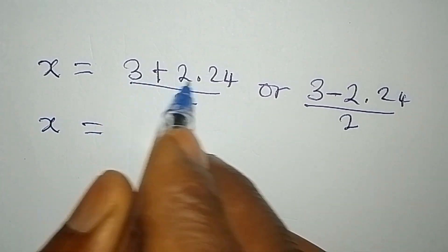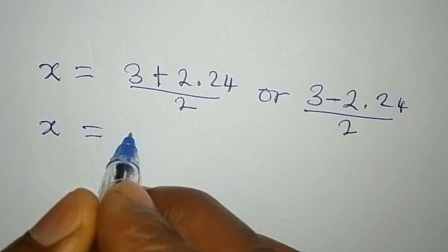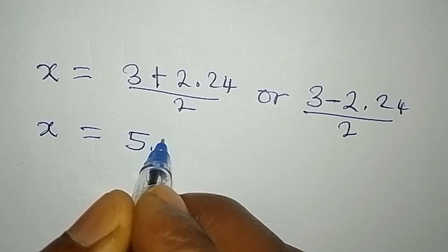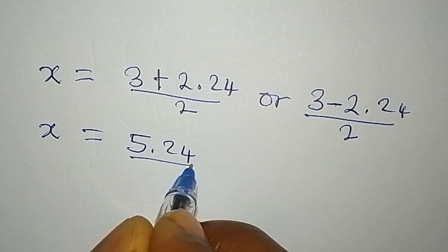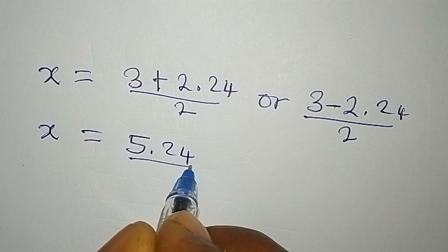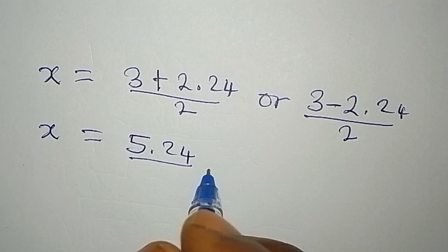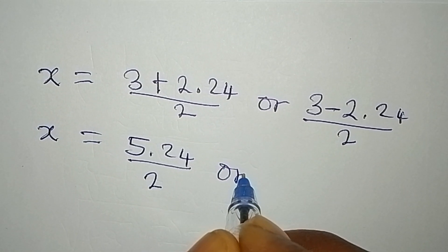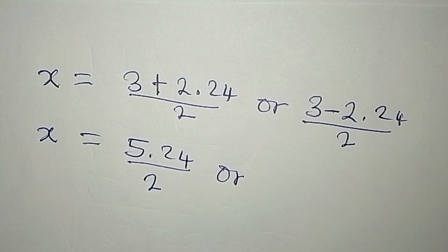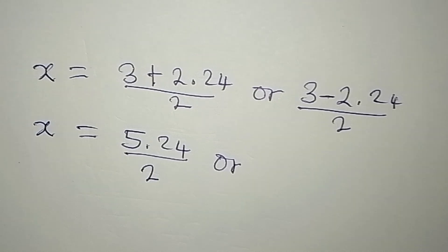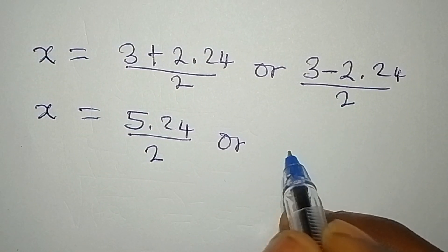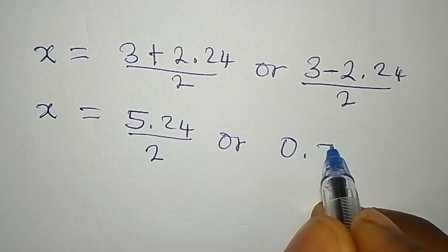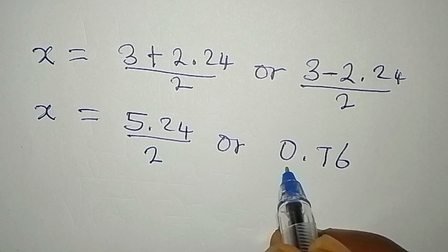So if you add this up, you will be having 5.24. That will be over 2. Or if you subtract this, you will have 0.76 over 2.